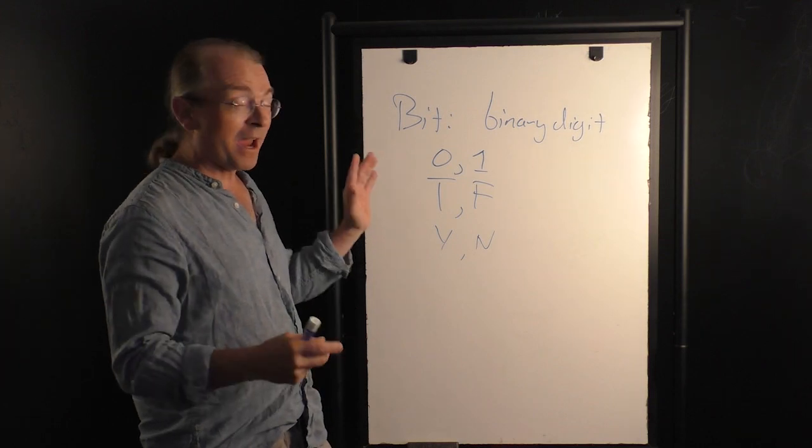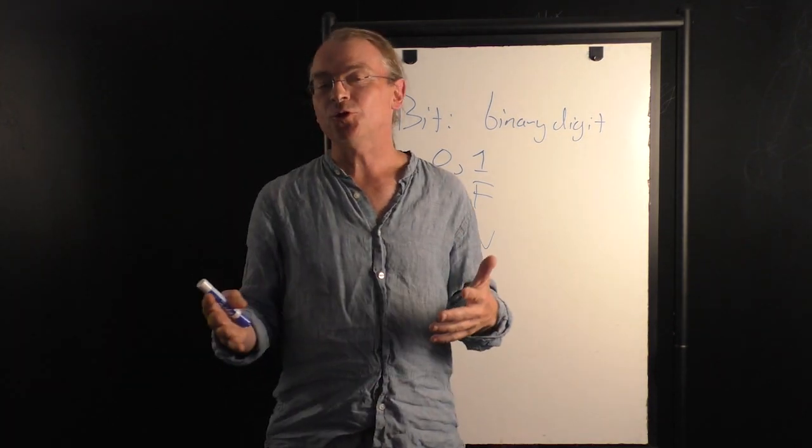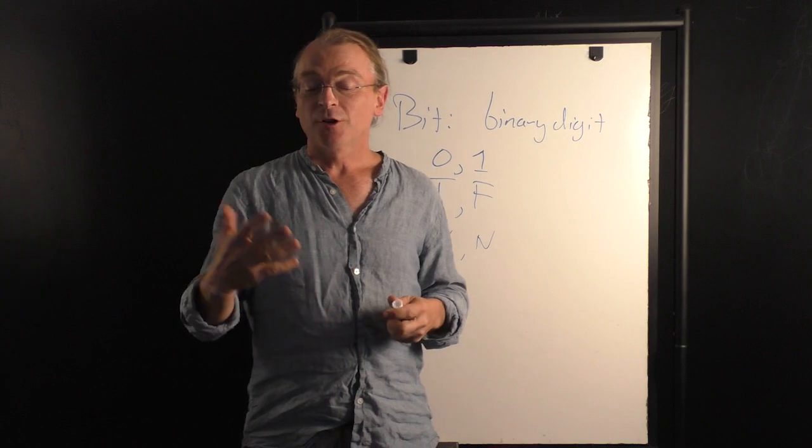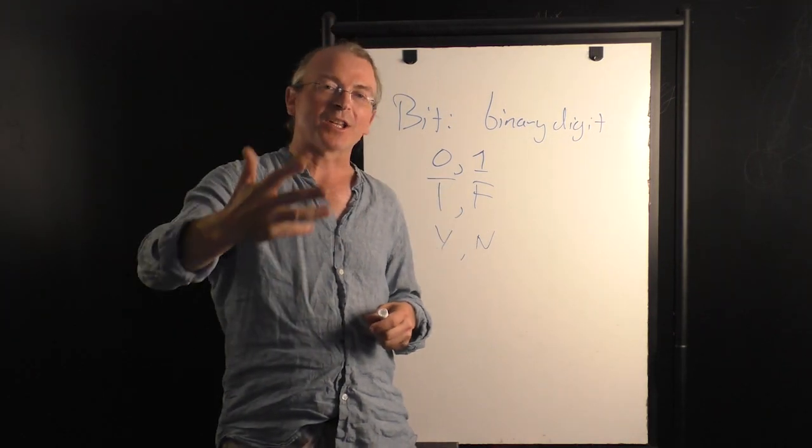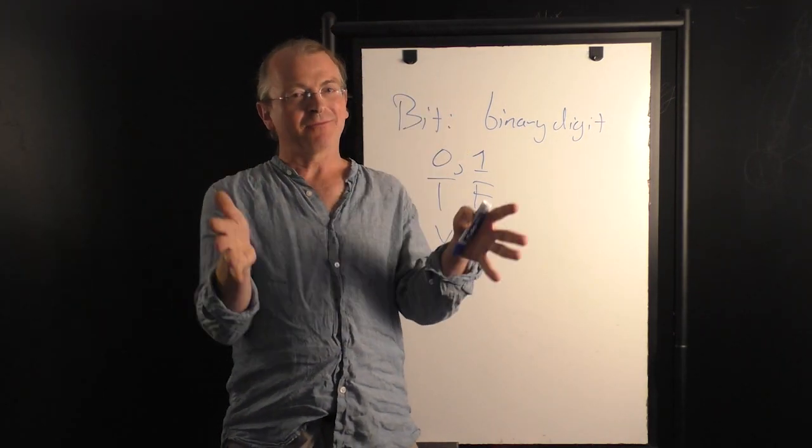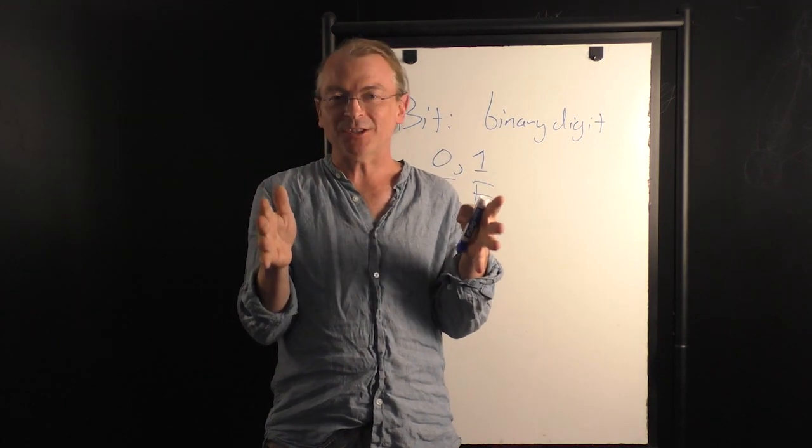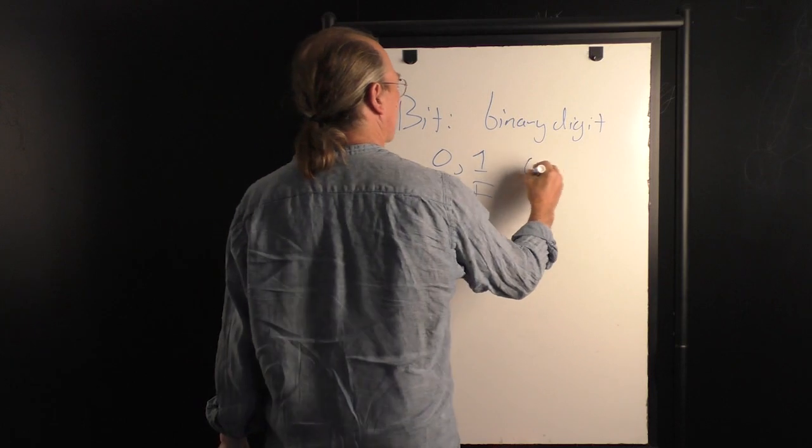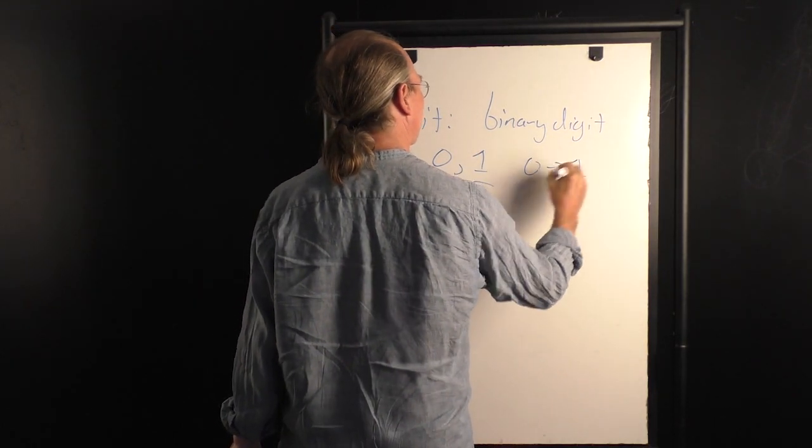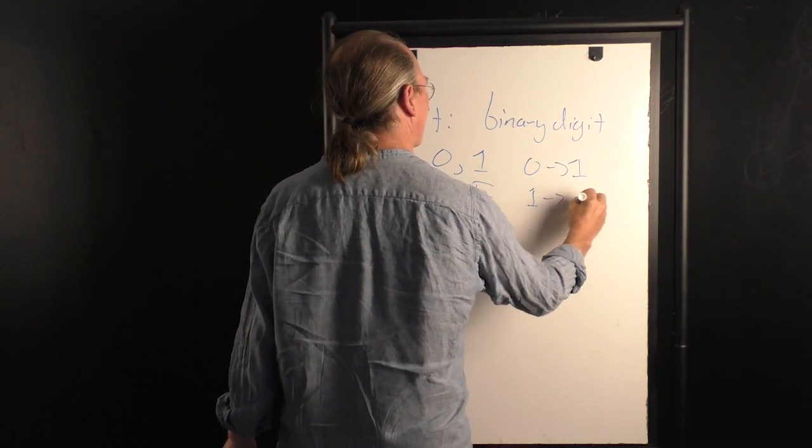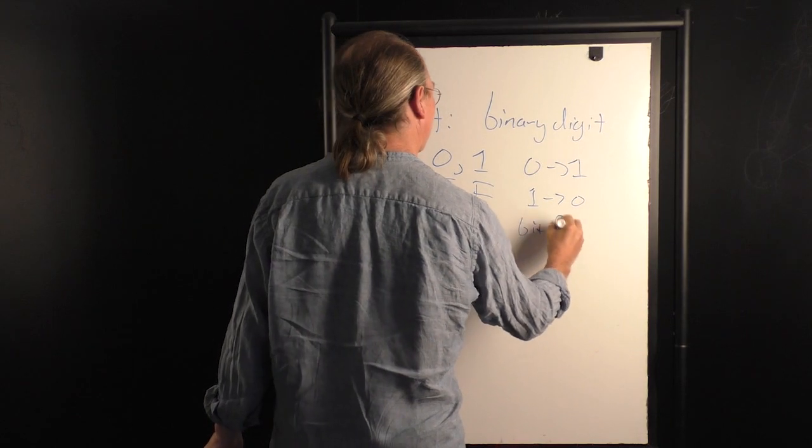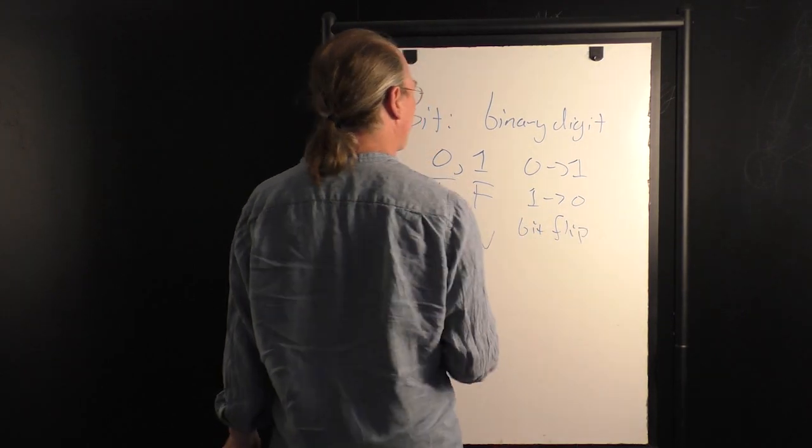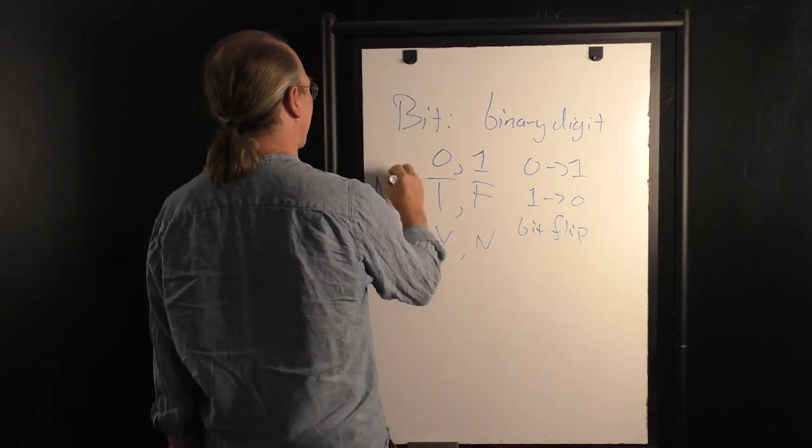And the way that this information processing revolution that we're part of works is that computers, which are devices that process information, they break information down into its tiniest pieces, bits, and then they flip those bits. So, for instance, zero goes to one, and one goes to zero is a bit flip. Or in the case of logic, it's called a not.